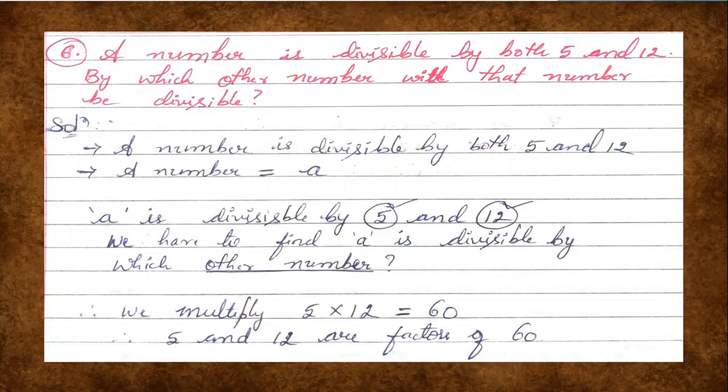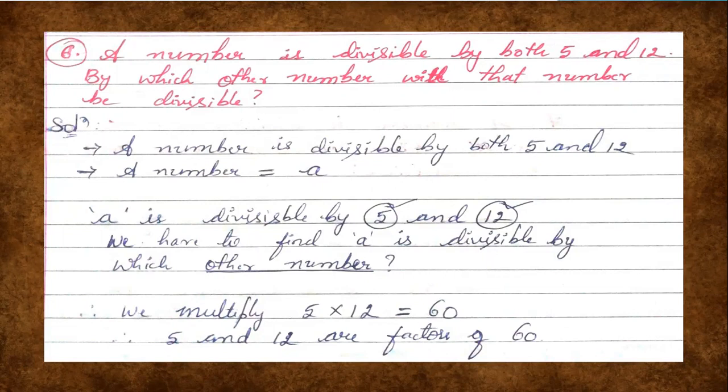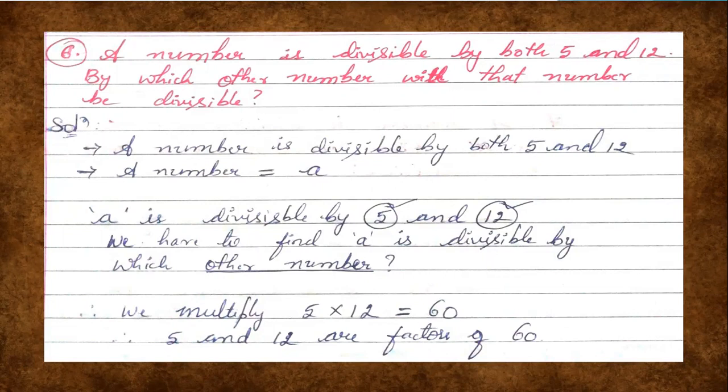Solution. First, we write what is given: a number is divisible by both 5 and 12. The number is not given, so we take it as a. We are considering that number as a. So here, a is divisible by both 5 and 12, and we have to find by which other numbers a is divisible.